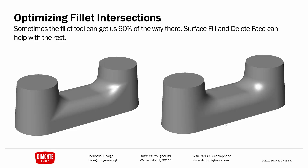Sometimes the Fillet tool can get us 90% of the way there, but we may want to do a little bit of manual cleanup work to get a really nice, smooth, aesthetic intersection. In the example on the left, we can almost clearly see the different fillets that were added to the model. With the example on the right, we get a smoother, more controlled transition of what that fillet intersection looks like.